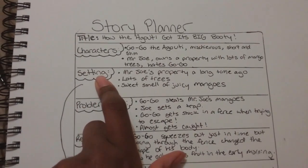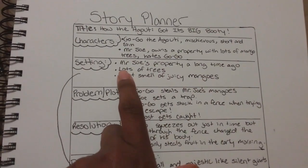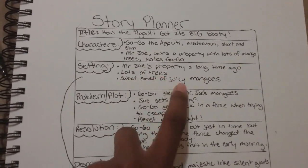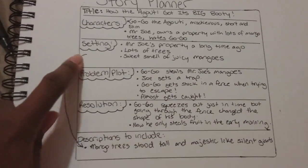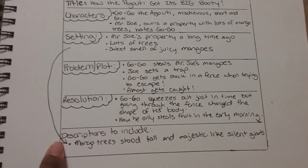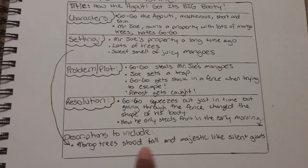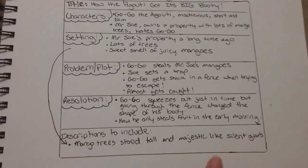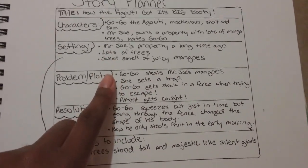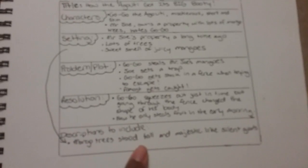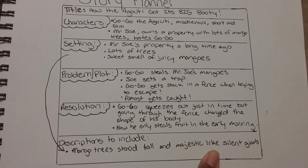Then I moved on to the setting. I said I want my story to take place on Mr. Joe's property a long time ago. It's going to have lots of trees, and it will have the sweet smell of juicy mangoes. Something else I wanted to include — a really good description — is that the mango trees stood tall and majestic like silent giants. This is a line that I'm going to copy word for word from my planning sheet into my story — I came up with this simile and thought it would be really nice to include. I want you guys to do the same — come up with at least one simile that you really want to include, whether it's a description of the setting or of one of the characters.